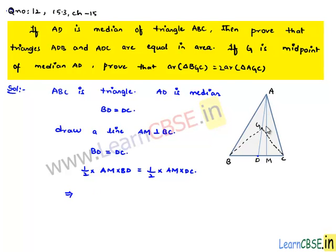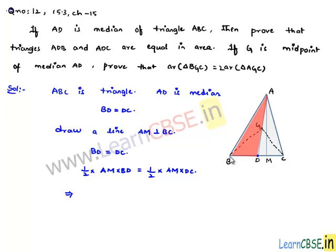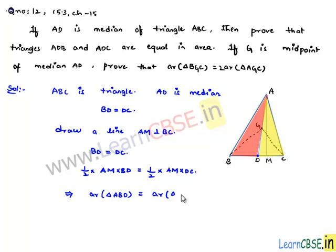Half times AM into BD is nothing but area of triangle ABD, since BD is the base and AM is perpendicular to BC — it will also be perpendicular to BD when extended to M. Therefore, area of triangle ABD equals half times AM into DC, which is nothing but area of triangle ADC, since DC is the base and AM is the height.